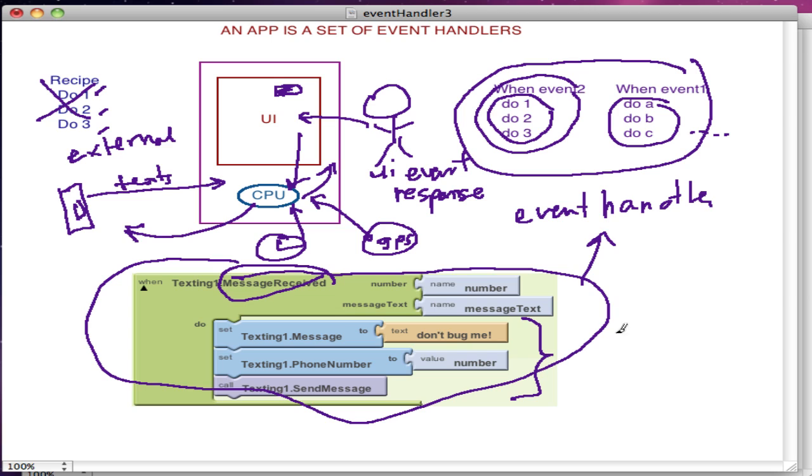We're going to move on and see some complexities like if statements and loops within the recipes and event handlers we write. But for now, the main takeaway is an app is a set of event handlers.